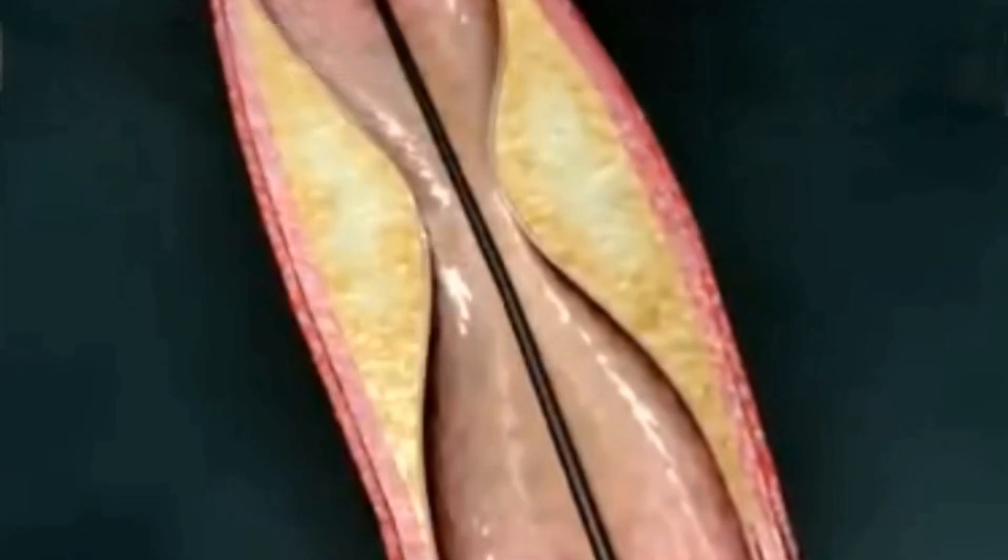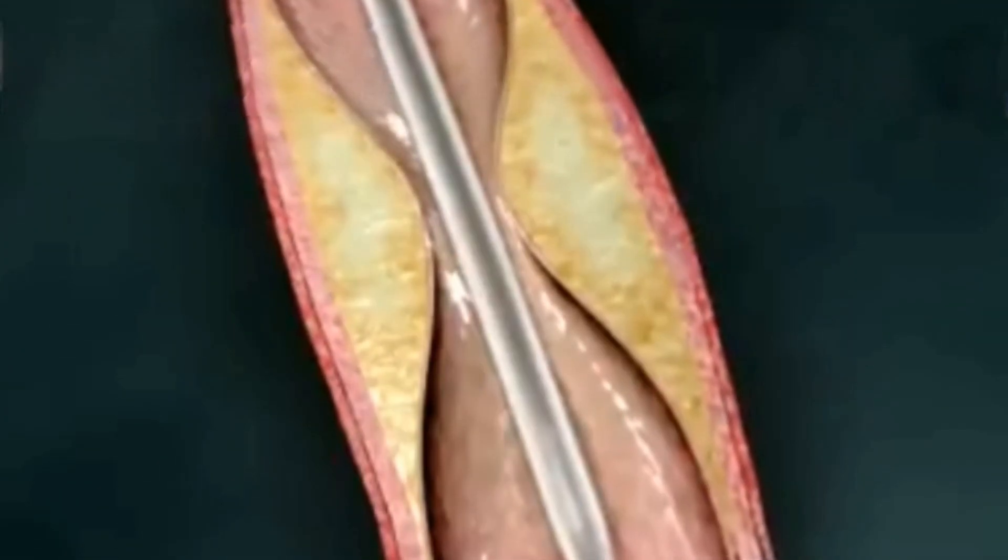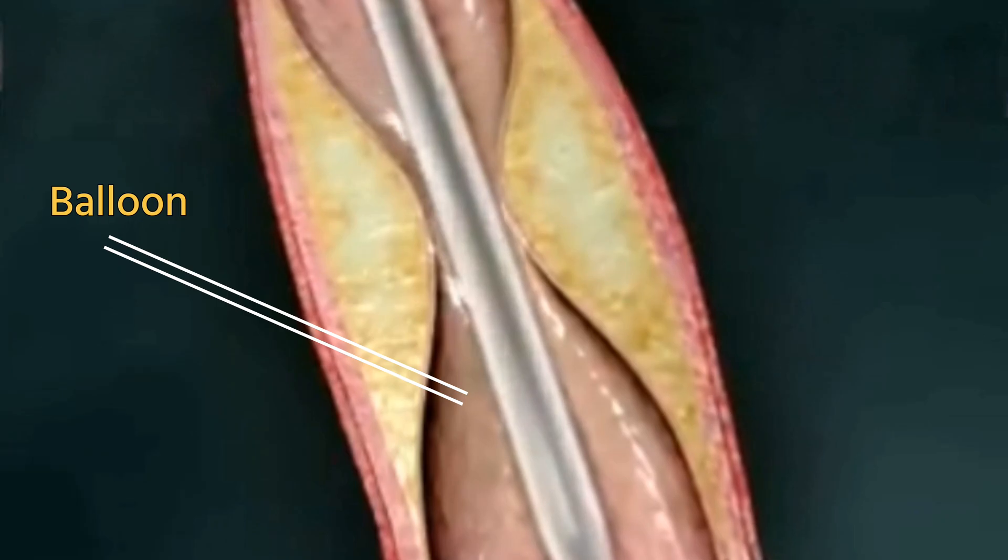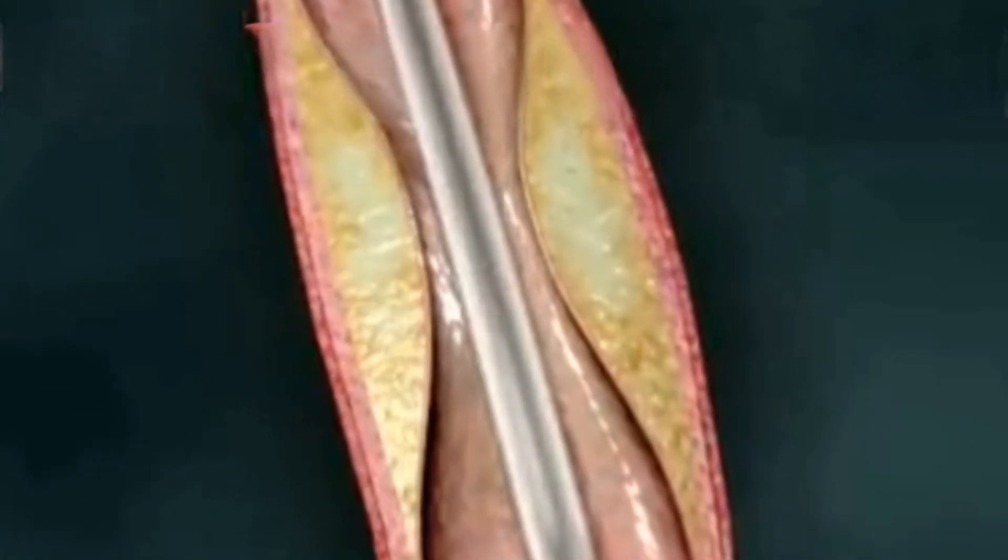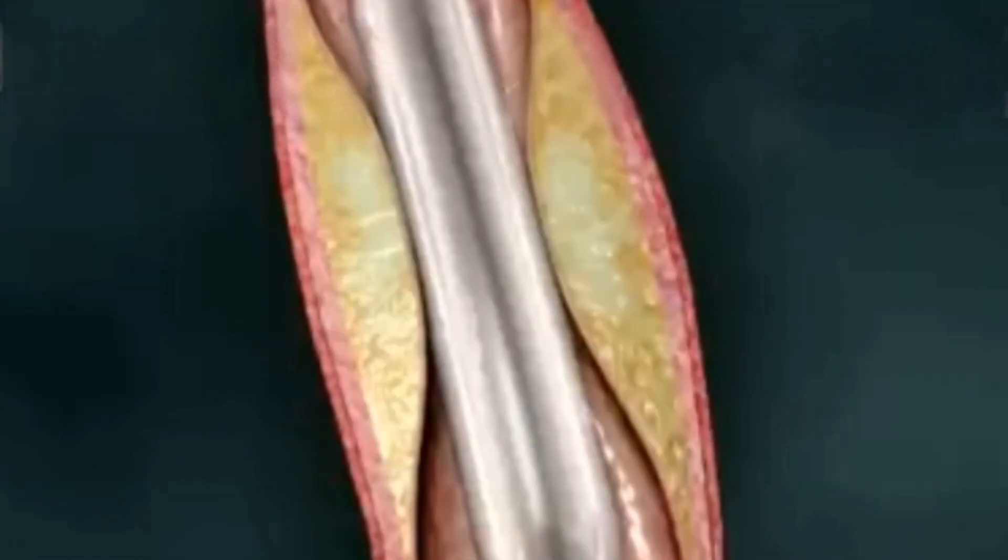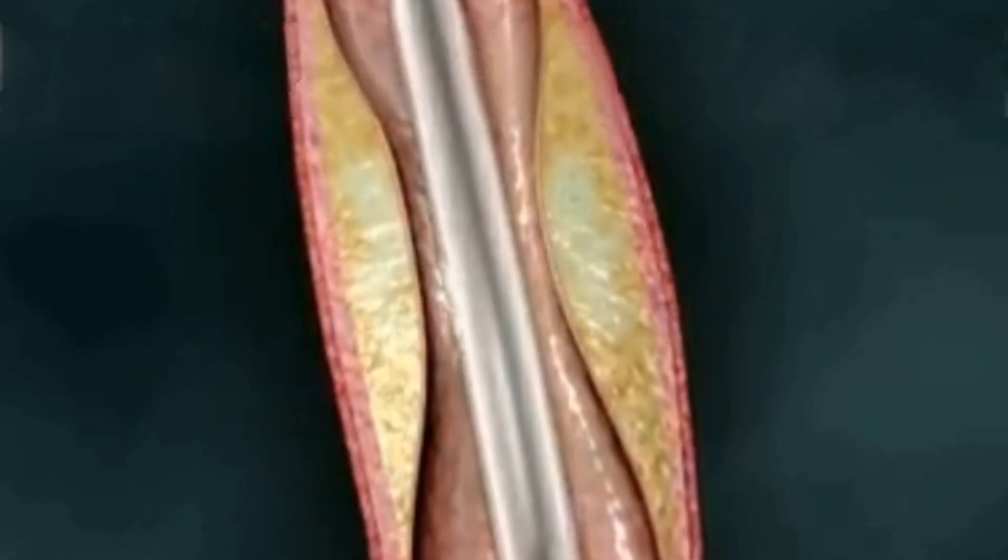Once the blockage is identified, your doctor will insert a flexible guide wire into the artery and advance a balloon-tipped catheter over this wire and into position at the site of the blockage. Rapid inflation and deflation of the small balloon pushes the vessel wall out, re-establishing blood flow through the artery.